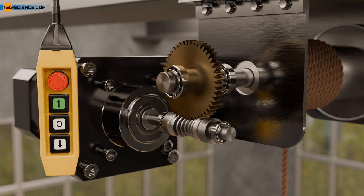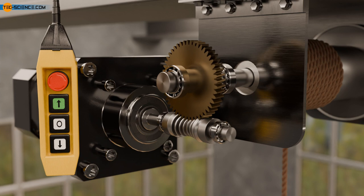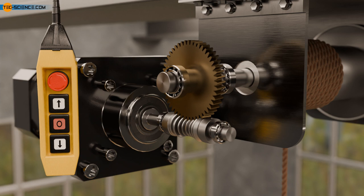Self-locking worm drives are used in lifting mechanisms or cable winches, for example. This prevents the winch cable from unwinding automatically when the motor is switched off. This is also referred to as statically self-locking. An additional brake can be dispensed with if self-locking is strong enough and cannot be released by vibrations.